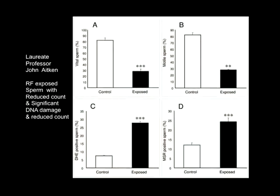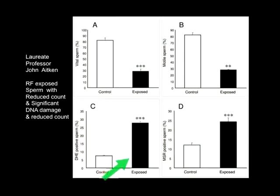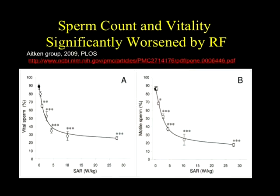Studies from Australia by John Aitken's group have looked at DNA damage in sperm. What they found is that the sperm exposed to cell phone radiation show three times more damage, and also show a chemical marker of that damage. Clearly, the amount of sperm and their ability to swim is worsened by RF radiation.